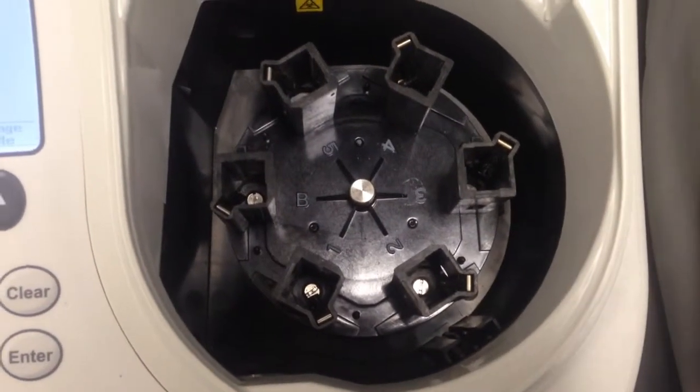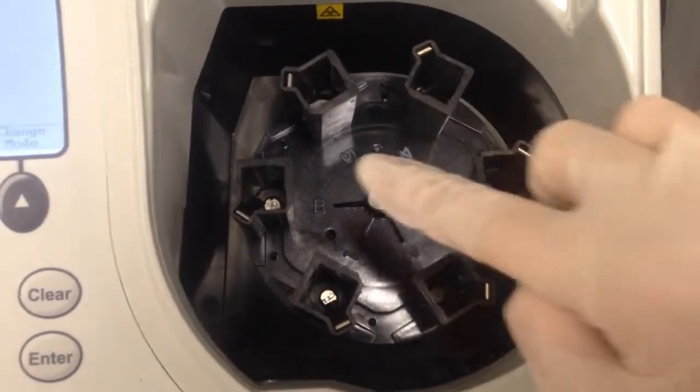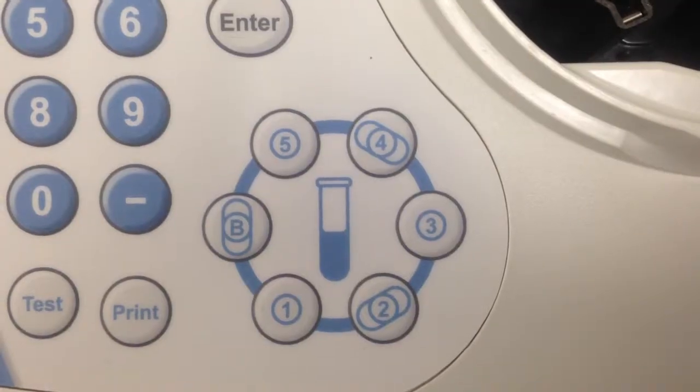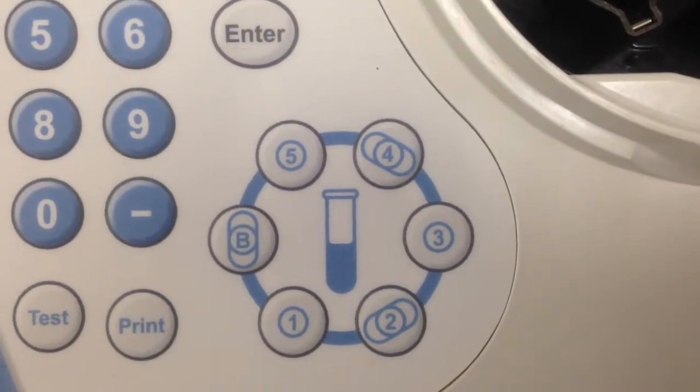Each slot is conveniently labeled, starting with B for blank. To access the slots, press the appropriately labeled buttons.